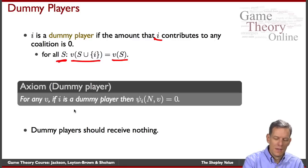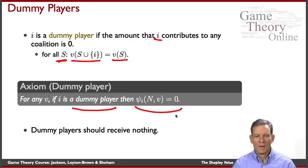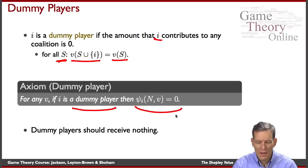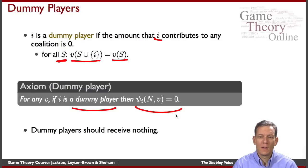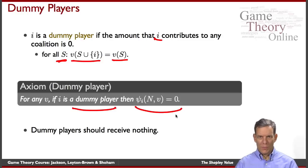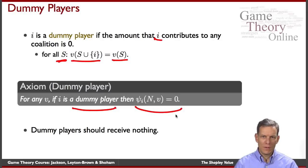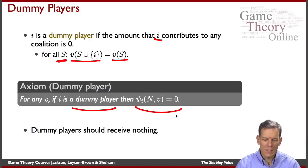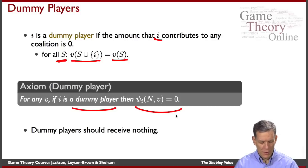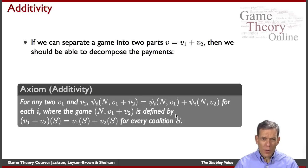The axiom is: if an individual is a dummy player, we give them nothing. On one hand this is a fairly reasonable axiom — if somebody has contributed absolutely nothing there's no reason they should get anything. On the other hand, this depends very much on the perspective you're taking. If we're thinking about a society, it could be that i contributes nothing for reasons beyond their control — an accident, for instance — and society might still want to allocate something to those individuals. It depends on whether we're thinking about social insurance and so forth, but it's a fairly intuitive and powerful axiom.